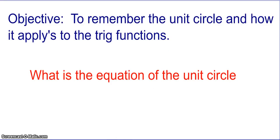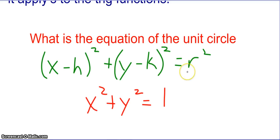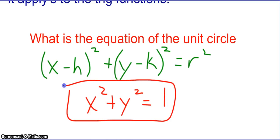Pause the video when you think you've got it. So if you remember, our general equation for a circle is x minus h squared plus y minus k squared equals r squared, where hk is the center and r is the radius. In this case, the unit circle is centered at (0, 0) and has a radius of 1. So our equation of the unit circle is x squared plus y squared equals 1.